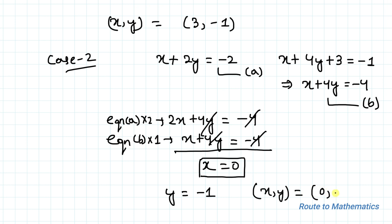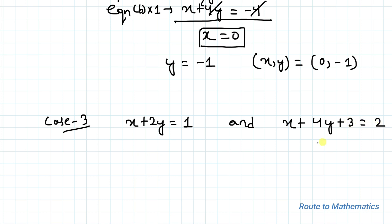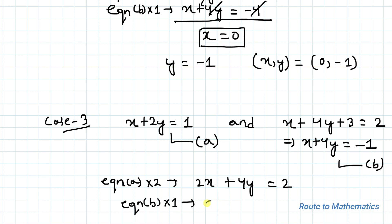Case 3: Let x + 2y = 1 (equation a) and x + 4y + 3 = 2, which implies x + 4y = −1 (equation b). Multiplying equation a by 2 gives 2x + 4y = 2, and equation b by 1 gives x + 4y = −1.